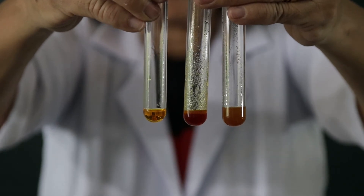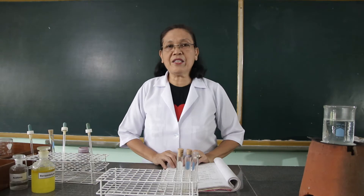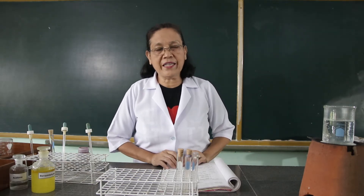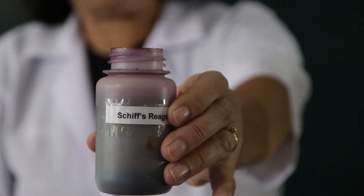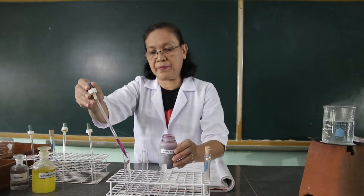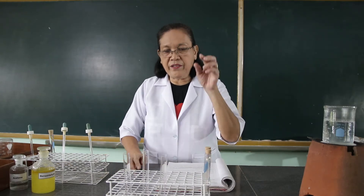The next procedure is we are going to test the reaction of these aldehydes and ketones with the Schiff's reagent. To 1 ml of the Schiff's reagent, we are going to add a few drops of the aldehydes and ketones. To each test tube, we are going to put the Schiff's reagent. Then to the first test tube, we are going to add one drop of the formaldehyde; to the second, one drop of the benzaldehyde; and to the third, one drop of the acetone.